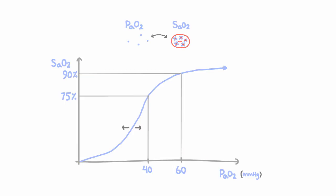Another result of the sigmoidal relationship is something we touched on in the last video: it's possible to develop relative hypoxemia while the SaO2 remains within normal limits.